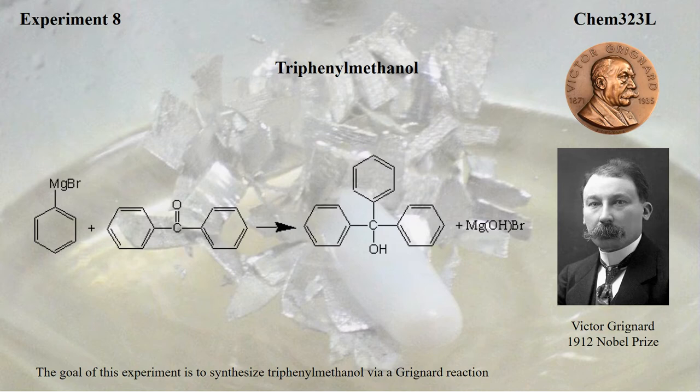This is the pre-lab slide presentation for experiment number eight, the synthesis of triphenylmethanol. We're going to be synthesizing triphenylmethanol starting with bromobenzene, reacting it with benzophenone using a Grignard reagent to form triphenylmethanol.